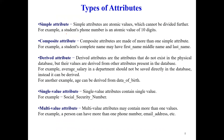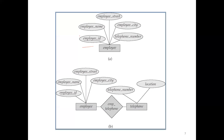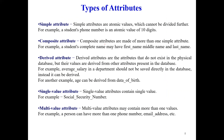There are different types of attributes in the ER model. First is the simple attribute — attributes that have atomic values, such as employee ID, employee name, and employee street. Second is the composite attribute — attributes made up of more than one simple attribute. For example, a student's complete name may have first name, middle name, and last name. Therefore, name is called a composite attribute.